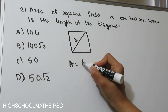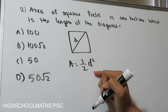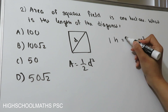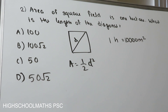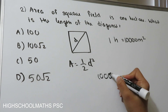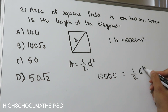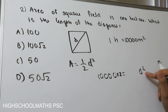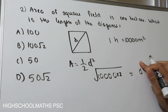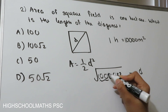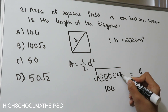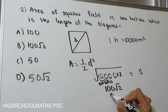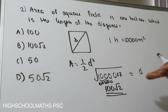The area of a square field in terms of diagonal is: Area = (1/2) × d². The area is 1 hectare, which equals 10,000 square metres. Substituting: 10,000 = (1/2) × d², so d² = 2 × 10,000 = 20,000. Taking the square root: d = √(20,000) = √(100 × 100 × 2) = 100√2. The diagonal is 100√2 metres. That is option B.